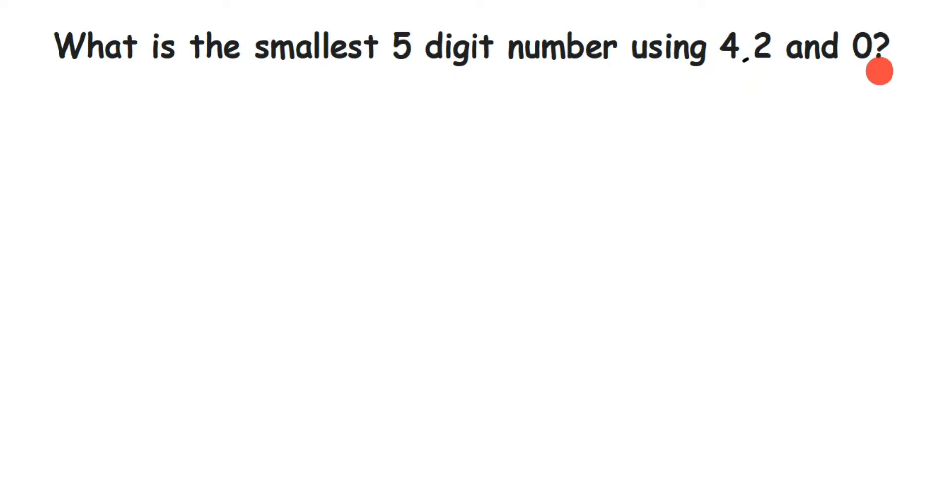Now let's start. Five digits means one, two, three, four, and five positions. What will come in the first digit, in this place?